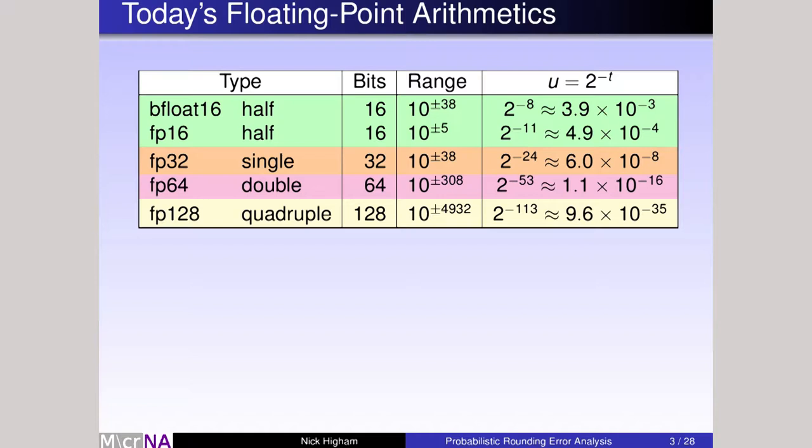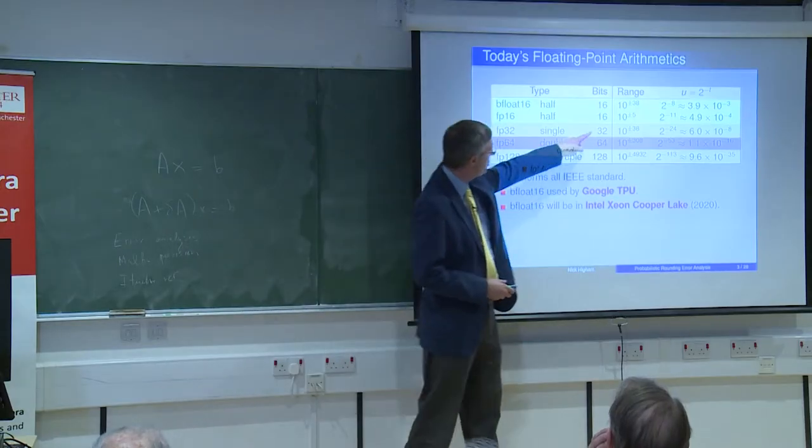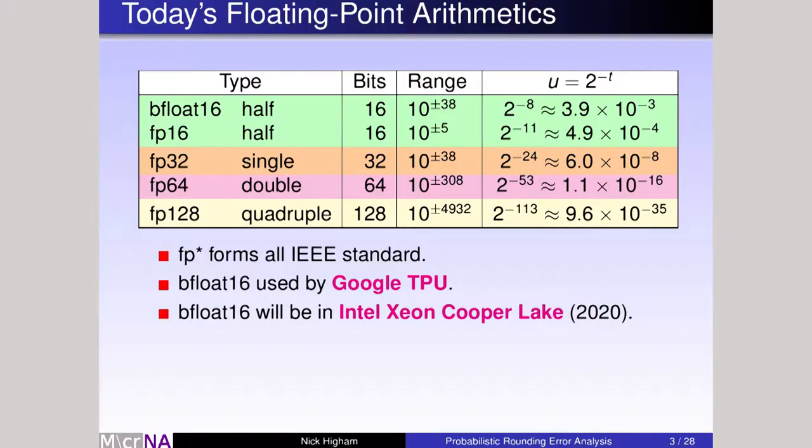A more recent arithmetic is Bfloat16. It was introduced by Google on their Tensor Processing Units a few years ago and is about to be taken up by Intel in the future Cooper Lake range of Xeons. I want you to look at the range, 10 to the plus or minus 5 compared with quadruple's huge range, and also the precision, the last column, from about three decimal digits down to 35 decimal digits. There's a huge range of precisions.